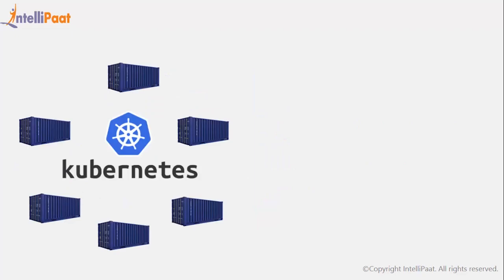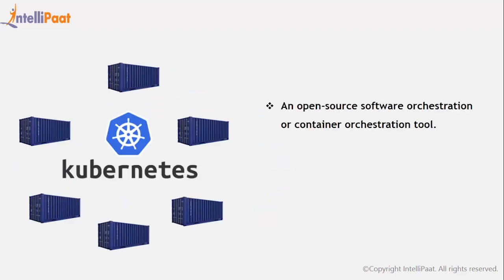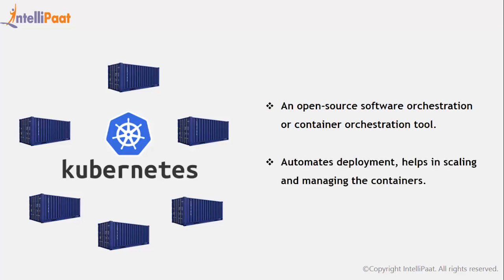And this is what Kubernetes broadly does. It is an open-source software orchestration management tool, which helps in automating the deployment, scaling, and managing of application containers. In brief, Kubernetes can be defined as a platform which helps in deploying thousands of containers effectively without damaging the application. It also keeps track of all the containers' locations and activities.